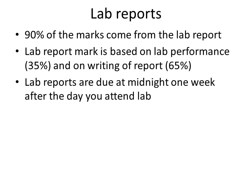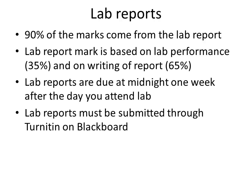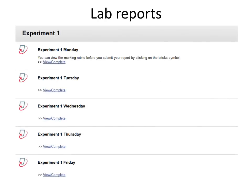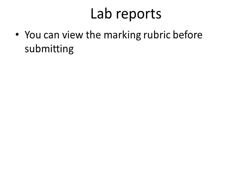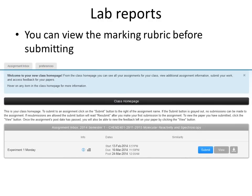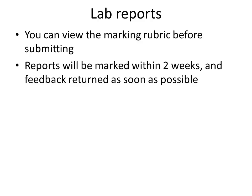Lab reports will be due at midnight one week after the day you attended lab. In the case of week seven experiments directly before the mid-semester break, they will not be due until week eight — so that will be two weeks after the day you attended lab. Lab reports must be produced electronically and submitted through Turnitin on Blackboard. Make sure that you submit your report in the correct drop box — for example, if you performed experiment one on a Monday, submit your report in the experiment one Monday folder. All lab reports will be marked using a rubric which you can view before you submit. Reports will be marked within two weeks and you'll be able to see the marked rubric as well as any comments that the demonstrators make on your report.